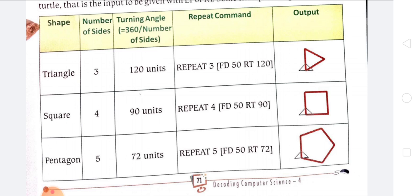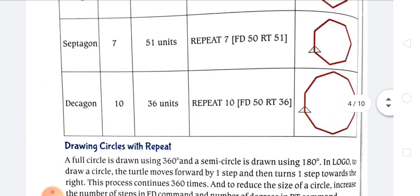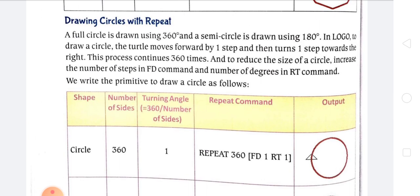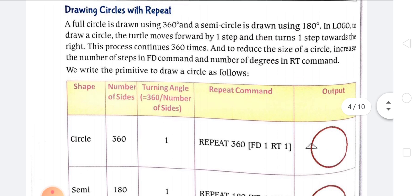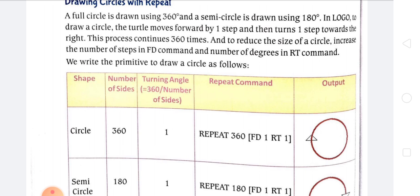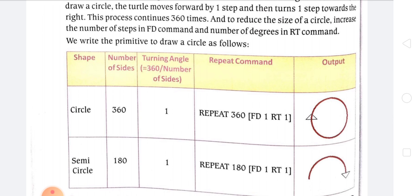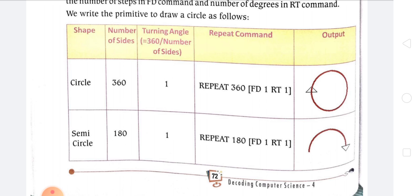For drawing circles with repeat: a full circle is drawn using 360 degrees and a semi-circle using 180 degrees. In Logo, to draw a circle the turtle moves forward by one step and then turns one step to the right — this process continues 360 times. To reduce the size of the circle, increase the number of steps in the fd command. Circle: repeat 360 [fd 1 rt 1]. Semi-circle: repeat 180 [fd 1 rt 1].